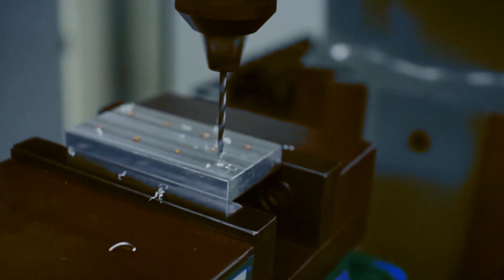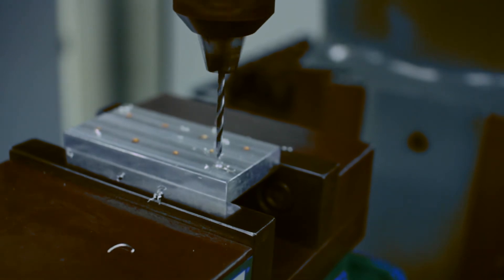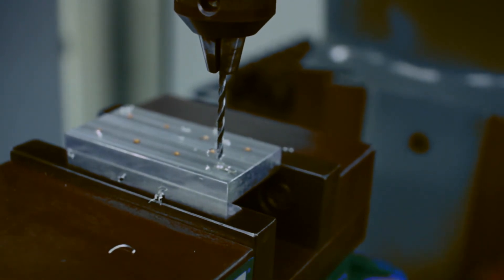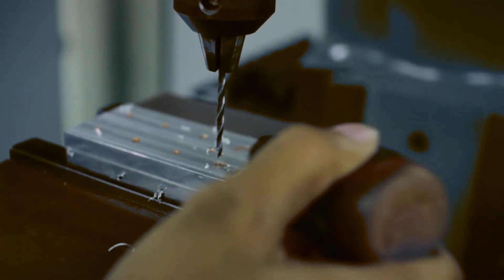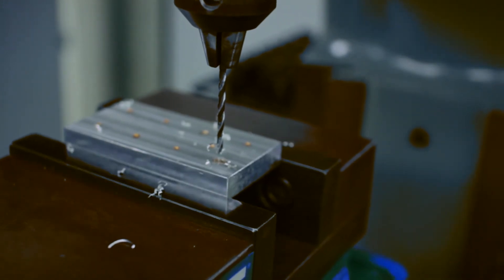As needed, shut off the machine, wait for the spindle to stop, and apply more oil. Repeat these steps until we have completed all the holes.